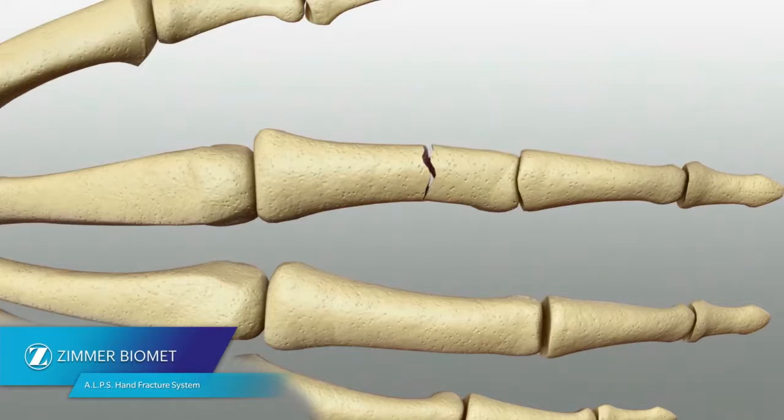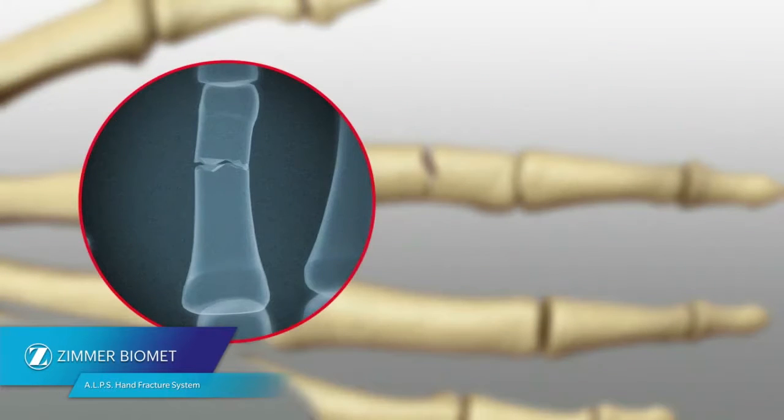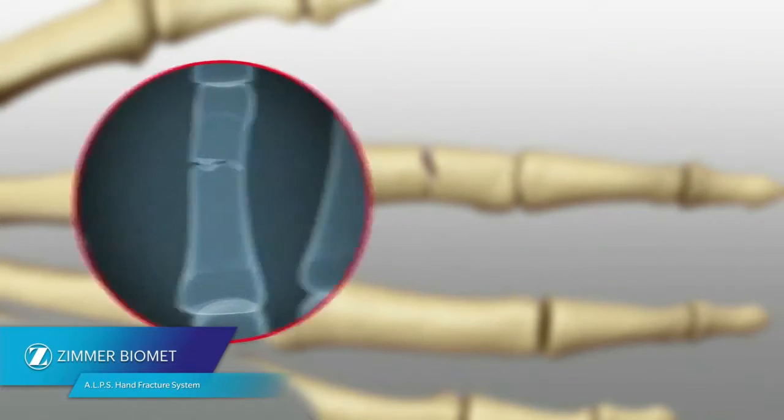After adequate exposure and irrigation of the incision site, reduce the fracture. This can usually be done visually, but in instances of comminuted fractures, the use of fluoroscopy may be helpful.